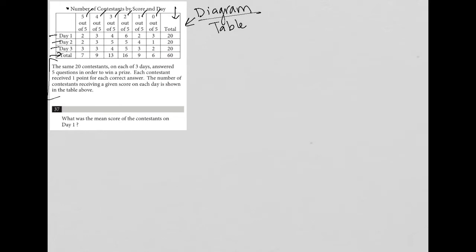So the question says the same 20 contestants on each of three days answered five questions in order to win a prize. Each contestant received one point for each correct answer.